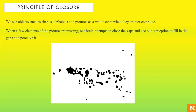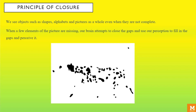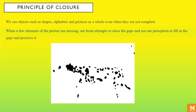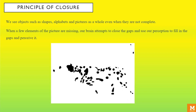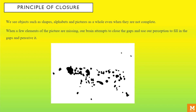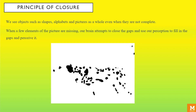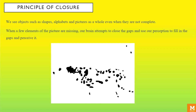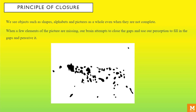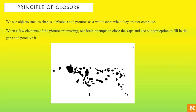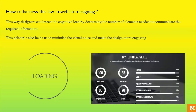Moving towards the principle of closure. Human visualization is strongly driven to see objects such as shapes, alphabets, and pictures as whole, even when they are not complete. When a few elements of the picture are missing, our brain attempts to close the gaps and use our perception to fill them and perceive it as a whole. We attempt to convert and perceive complex ambiguous elements into easy ones. Isn't it intriguing to see how our mind fills the gaps and perceives these moving dots as a dog? When the user is exposed to the right amount of information, the brain perceives and derives a conclusion by filling the gaps and creating a unified whole. This way we can lessen the cognitive load that the user may have and also decrease the visual noise of the design.